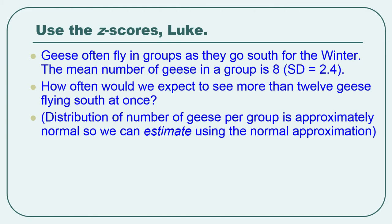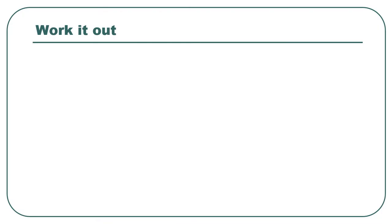Now we don't know anything else about the data set of geese, about the distribution of geese. So we can't just go count the percentage that are more than 12 in a group. So we have to use the normal approximation in this case if we can. So pause this if you want to work through this problem on your own.